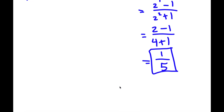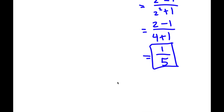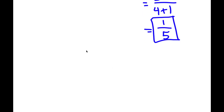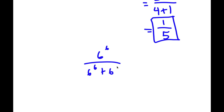Now I have one final problem for you guys. This is really a simple problem, so if you guys use the properties that I just taught you, you can simply solve this problem. We have 6 to the power of 6 divided by 6 to the power of 6 plus 6 to the power of 4. So I'm going to ask you guys to go ahead and pause the video to attempt to solve this problem.